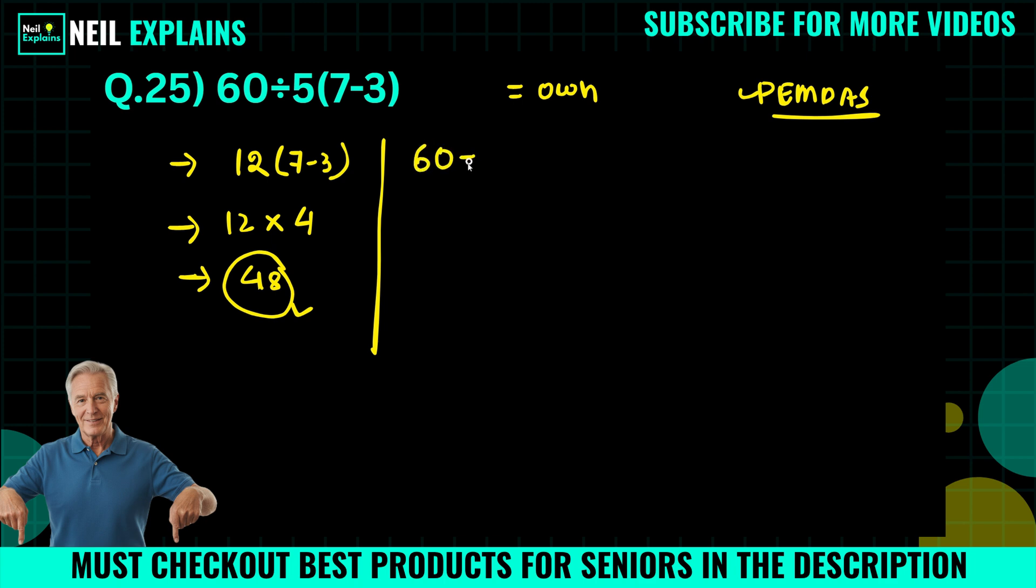So we will rewrite our question here: 60 divided by 5, 7 minus 3. According to PEMDAS - parenthesis, exponent, multiplication, division, addition, subtraction - first priority is given to parenthesis. So we will operate this part first. We will write here 60 divided by 5, and 7 minus 3, that is equal to 4.